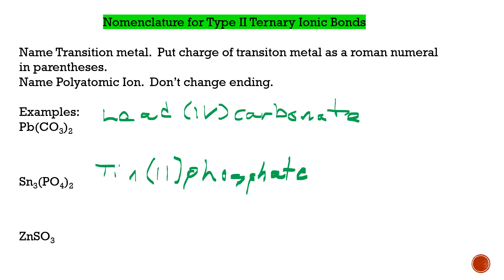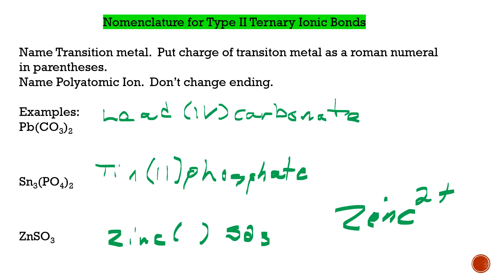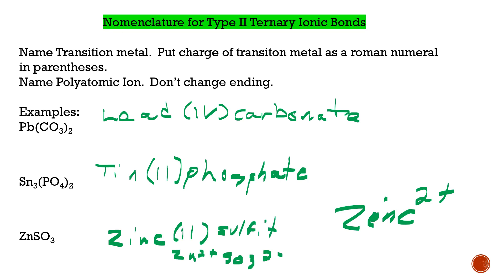For ZnSO3: we know that zinc always has a 2+ charge. SO3 is sulfite with a 2− charge. We have one zinc and one SO3 — the 2− total on this side is balanced by the 2+ on zinc's side. Zinc stays at 2+. Note that I almost wrote SO3 as the name — the correct name is sulfite. So the full name is zinc(II) sulfite. Hopefully that helps you guys — let me know if you have any questions, and I will see you soon.